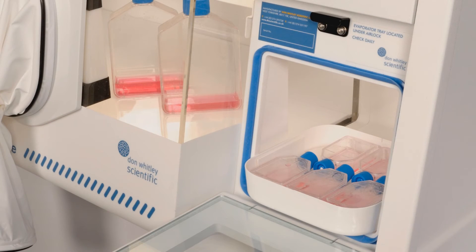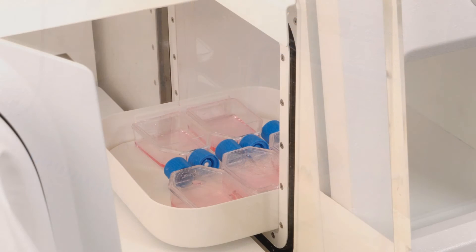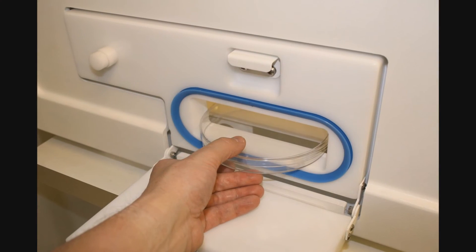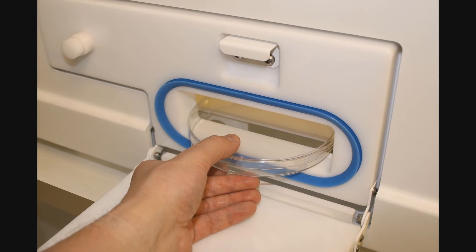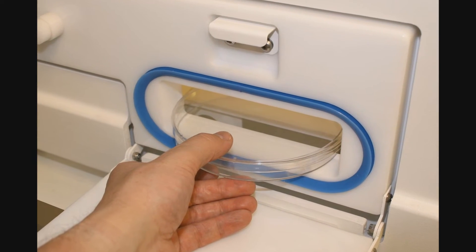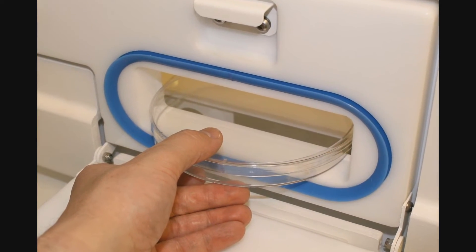Every A35 is equipped with a transfer airlock to introduce samples or equipment. The 12 liter rapid cycle airlock has the capacity to introduce up to 40 petri dishes in 60 seconds. There is also the option to specify the 15 centimeter letter box, ideal for quickly transferring all sizes of dishes and small items.